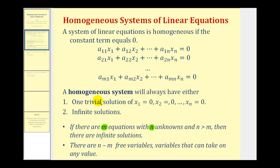A homogeneous system of equations will always have either one trivial solution, when all the variables are equal to zero, or it will have an infinite number of solutions.